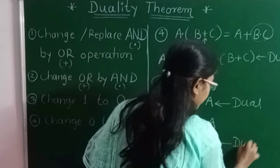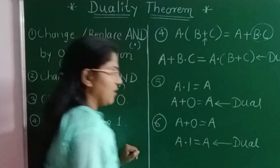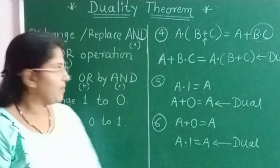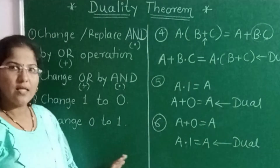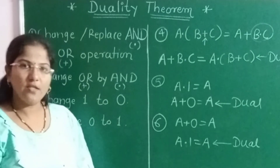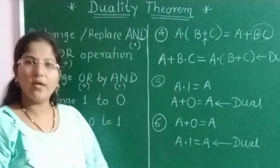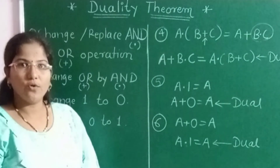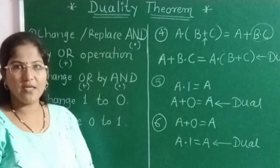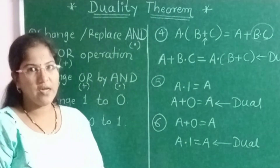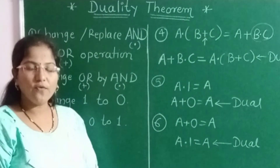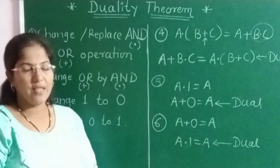This is how very simple it is to find the dual of any given expression. You have to remember only these four points: change plus to dot, dot to plus, 1 to 0, and 0 to 1. If you understood this video, please like it, subscribe to my channel if you haven't already, share it with your friends, and don't forget to click on the bell icon to get notifications of my next uploaded videos. Thank you.